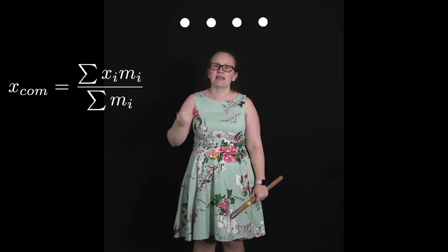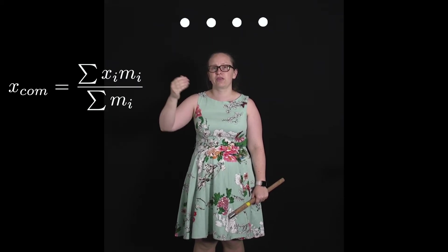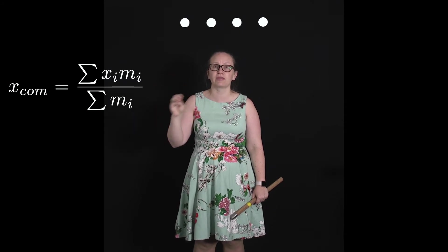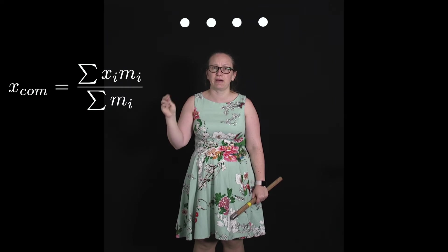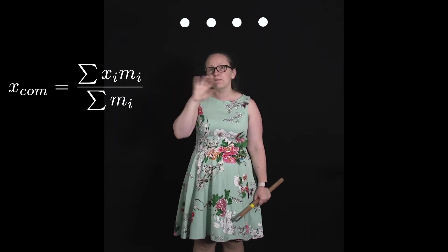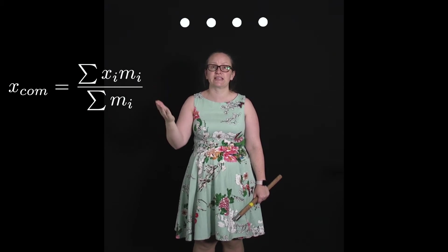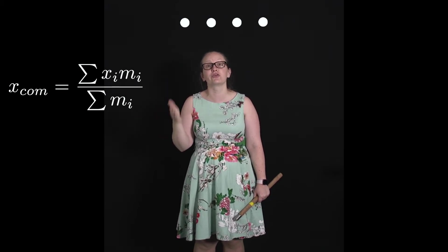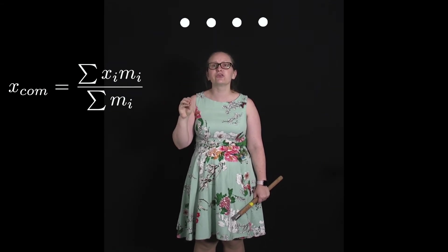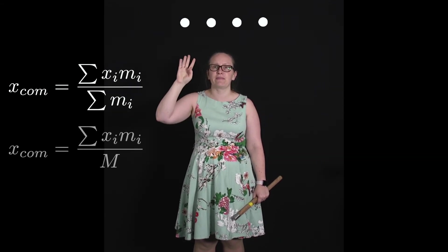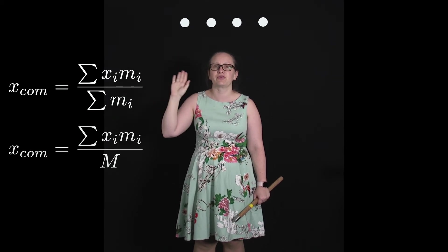In this case, x_i represents the displacement of the i-th particle from the origin, and m_i is the mass of the i-th particle. When we sum all the masses, so the sum of m_i, we're just getting the total mass of the system. So often we'll represent the total mass of the system with a capital M. We could also write that x_com equals the sum of x_i m_i all over capital M.